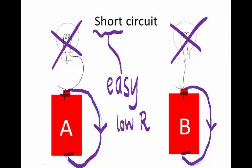So what would happen in these short circuits is that the battery would get flat very quickly. Why? Because of the short circuit, it's a very easy path for the current to flow, so a lot of current will flow and that will cause the battery to get flat very quickly.